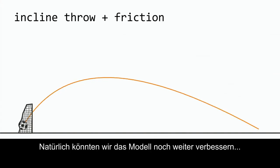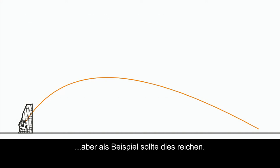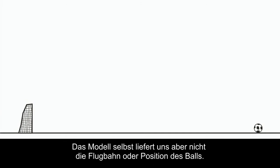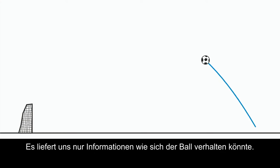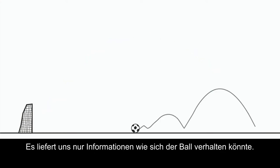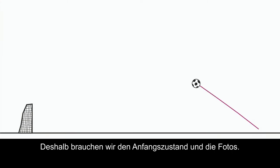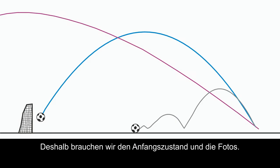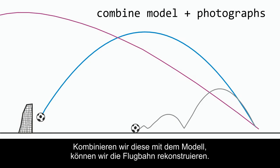Of course, we could still improve it in many ways, but for the sake of demonstration, it will do. The model on its own does not tell us the ball's trajectory, or any concrete locations the ball occupied. All it gives us is a framework for how the ball could behave. That is why we need the starting conditions and the photographs. Combining them with the model enables us to initiate the reconstruction.